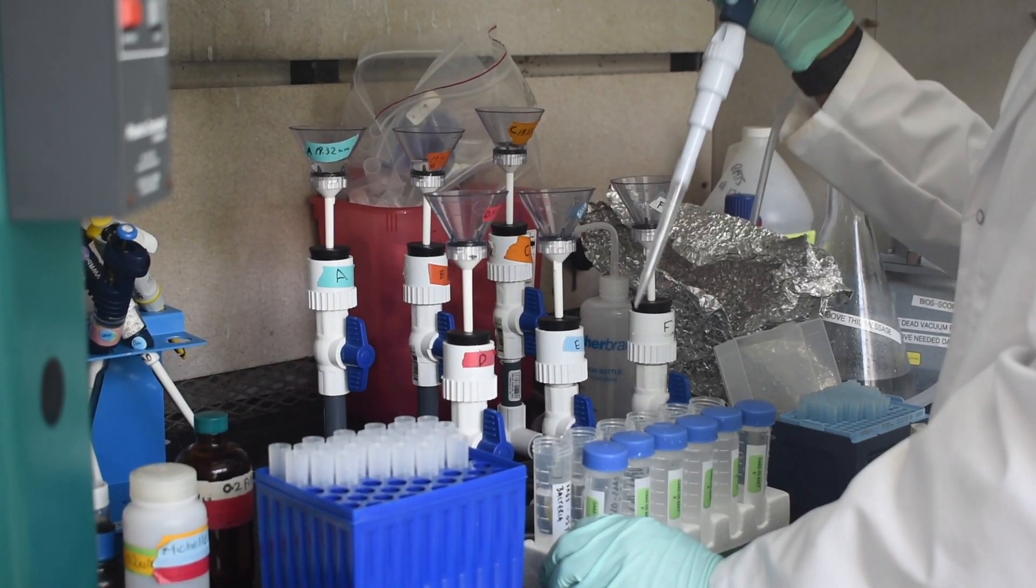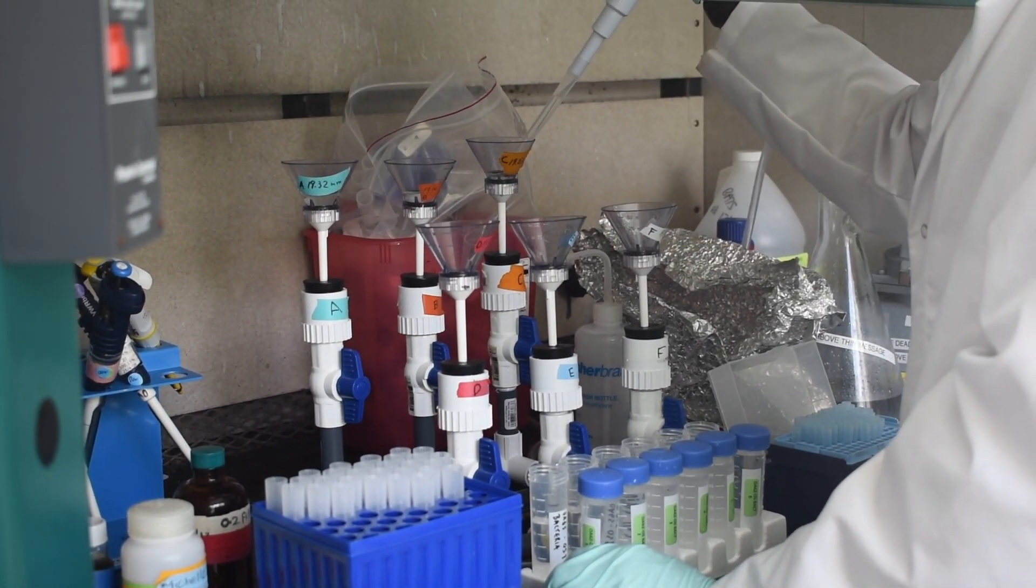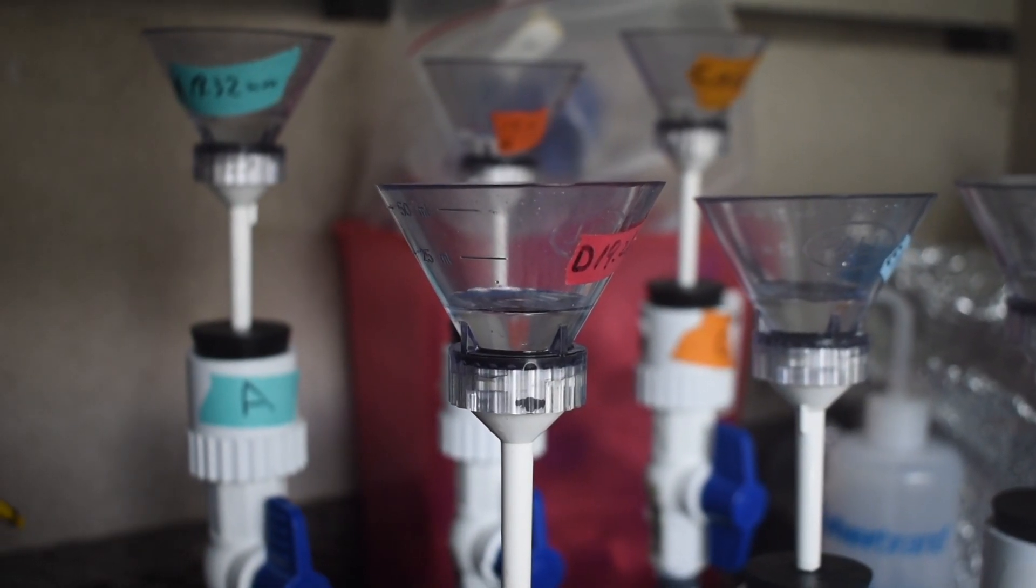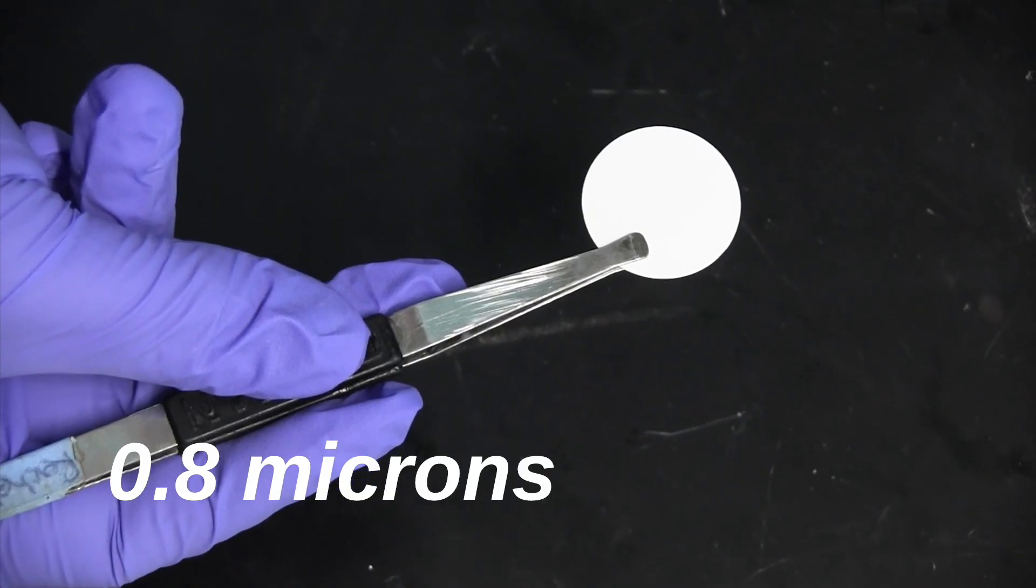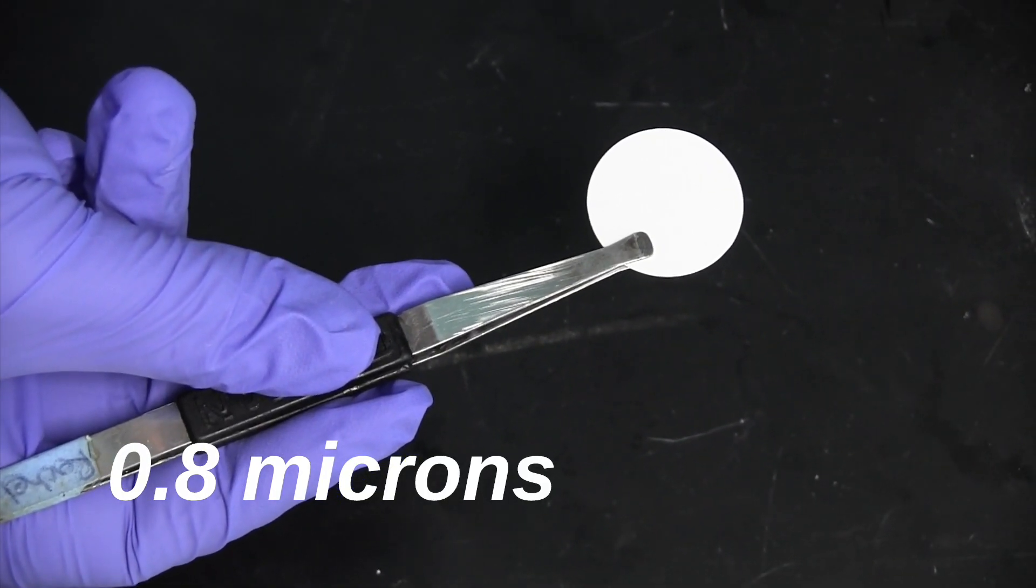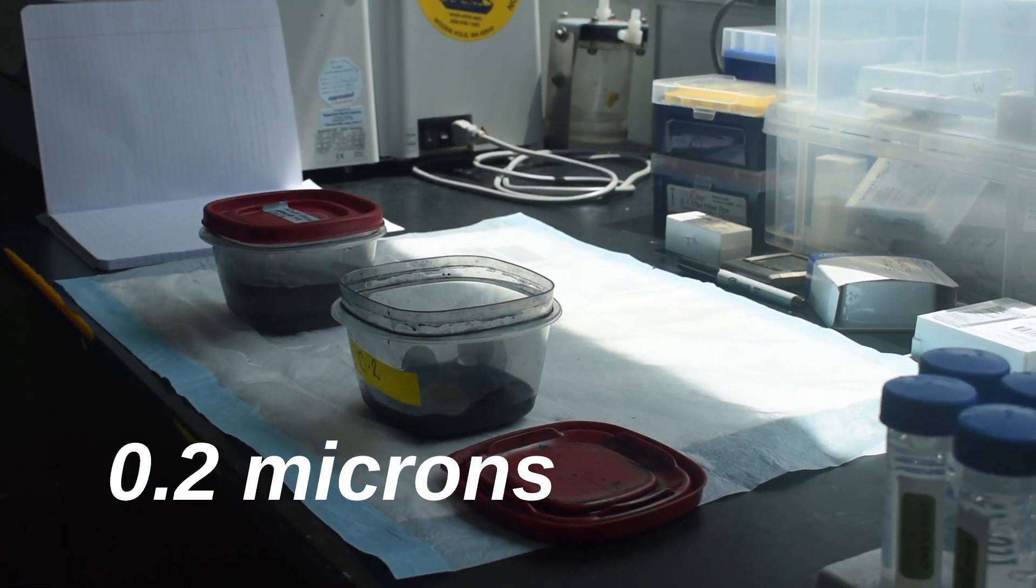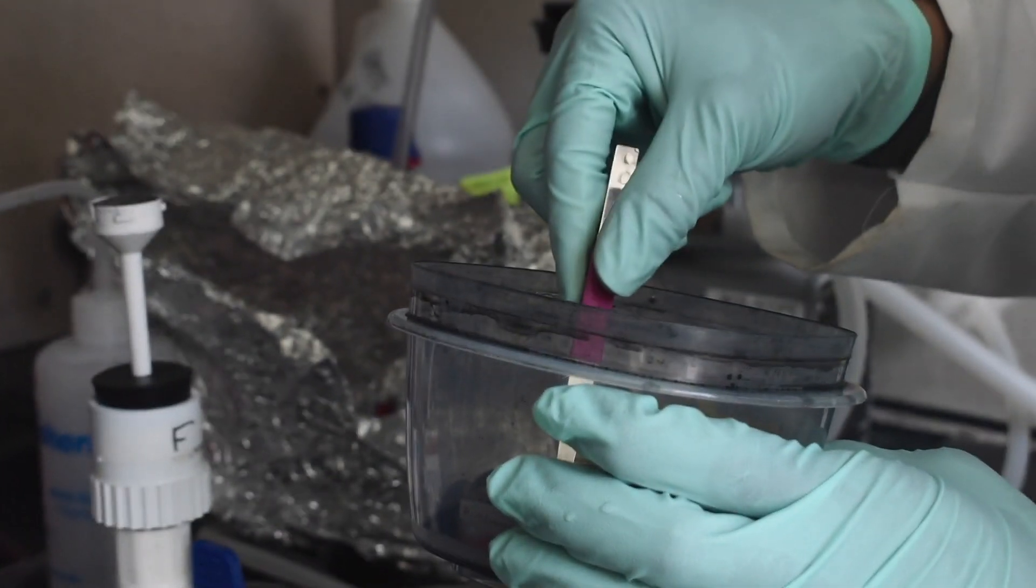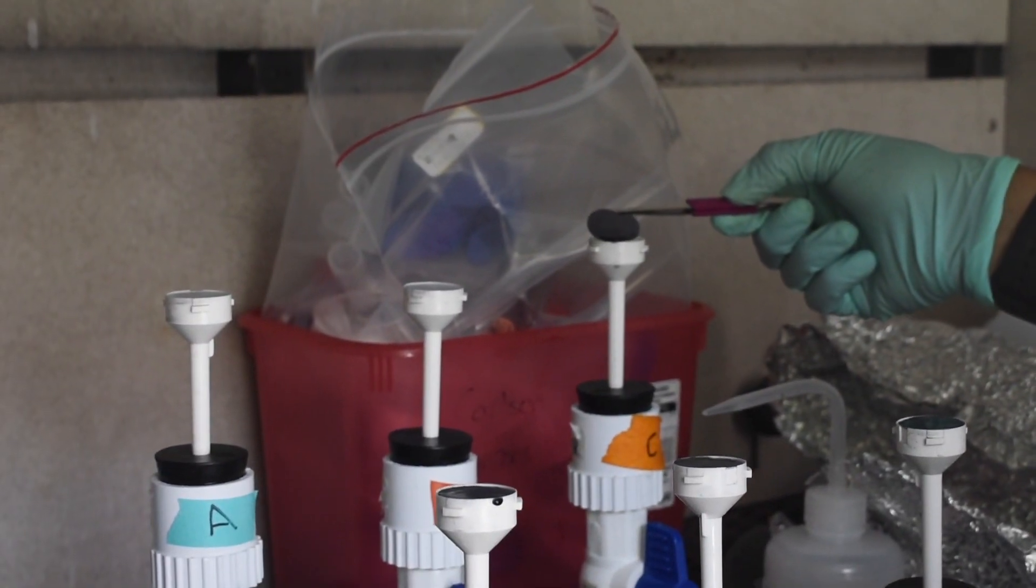Once they're thawed we build the fume hood and we start doing the filtering and so we have the filter rigs and first we need to put on a backing filter which is 0.8 microns and this helps with evenness of distribution of the cells and then we use a 0.2 micron polycarbonate filter for the bacteria and the bacteria stick on top of the polycarbonate filter.